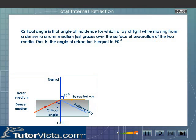Critical angle is that angle of incidence for which a ray of light, while moving from a denser to a rarer medium, just grazes over the surface of separation of the two media. That is, the angle of refraction is equal to 90 degrees.